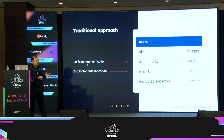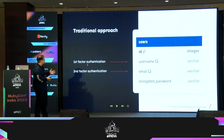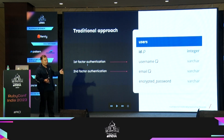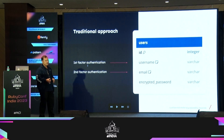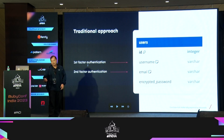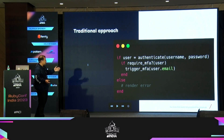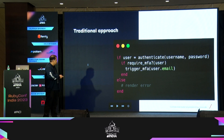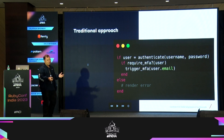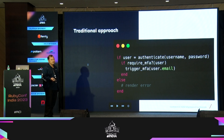A traditional approach would be: you have the first factor authentication which is username and password, and then the second factor is email. You have all that in your user table, for example. Then you can have an if-condition in your session controller — authenticate with username and password, check whether you need to trigger MFA or not, and if yes, trigger MFA using the user's email.